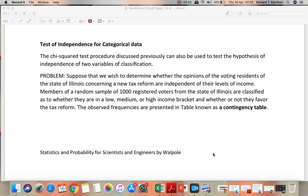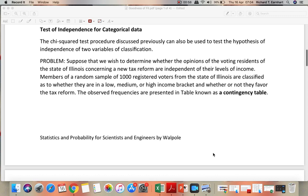Suppose that we wish to determine whether the opinions of the voting residents of the state of Illinois concerning a new tax reform are independent of their levels of income. Members of a random sample of 1,000 registered voters from the state of Illinois are classified as to whether they are in a low, medium, or high-income bracket, and whether or not they favor the tax reform. The observed frequencies are presented in table known as the contingency table.